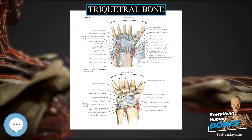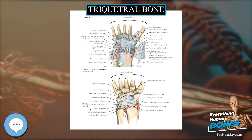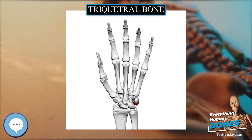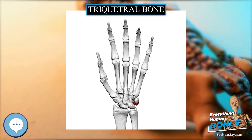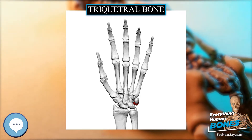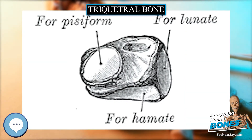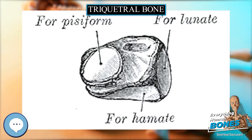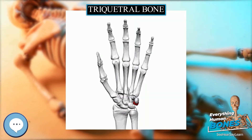The triquetral bone, also called trichadrum, pyramidal, three-faced, and formerly cuneiform bone, is located in the wrist on the medial side of the proximal row of the carpus between the lunate and pisiform bones.